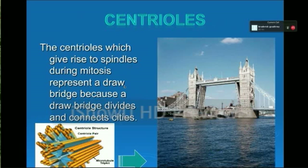Centrioles. The centrioles, which comprise the spindles during mitosis, represent a drawbridge because the drawbridge divides and connects cities.